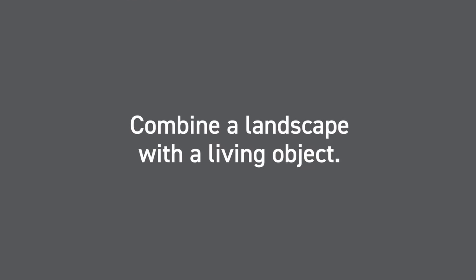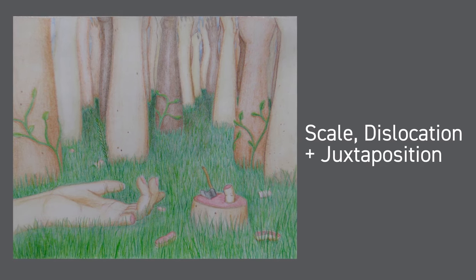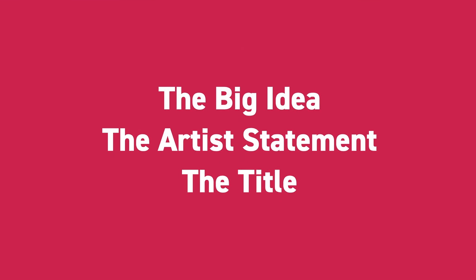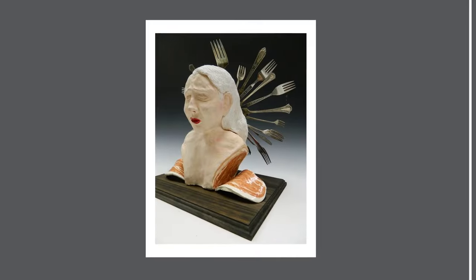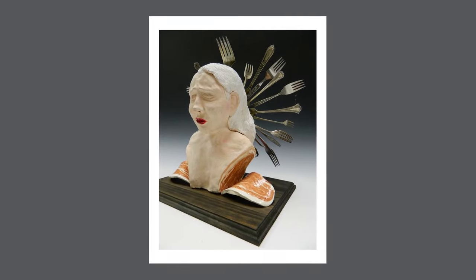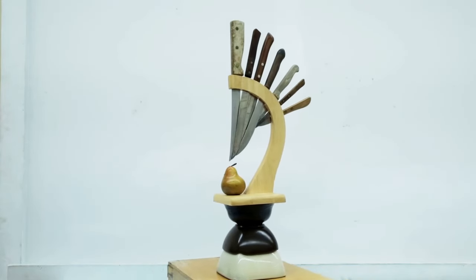How about this prompt: combine a landscape with a living object. This high school student played with scale, dislocation, and juxtaposition. Surrealists are drawn to the surprising and grotesque. But what's the big idea behind their art? The big idea, the artist statement, and the title are all really important to the judges. Let's do one together — juxtapose two different items from your kitchen. Combining two functional objects together can sometimes render them purposeless, and then they can become symbolic objects and therefore surrealist objects.